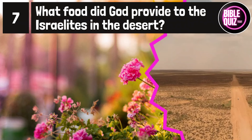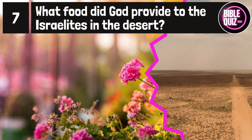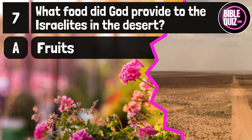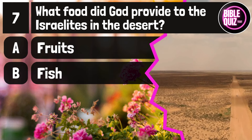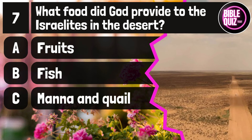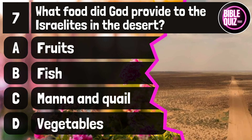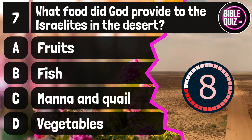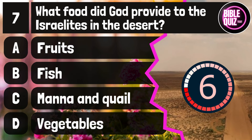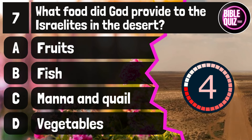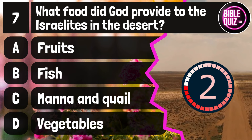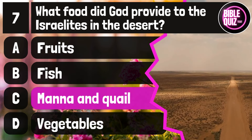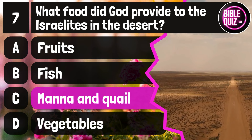Question number 7. What food did God provide to the Israelites in the desert? Option A: Fruits. Option B: Fish. Option C: Manna and quail. Option D: Vegetables. Time to think. The answer is option C: Manna and quail.